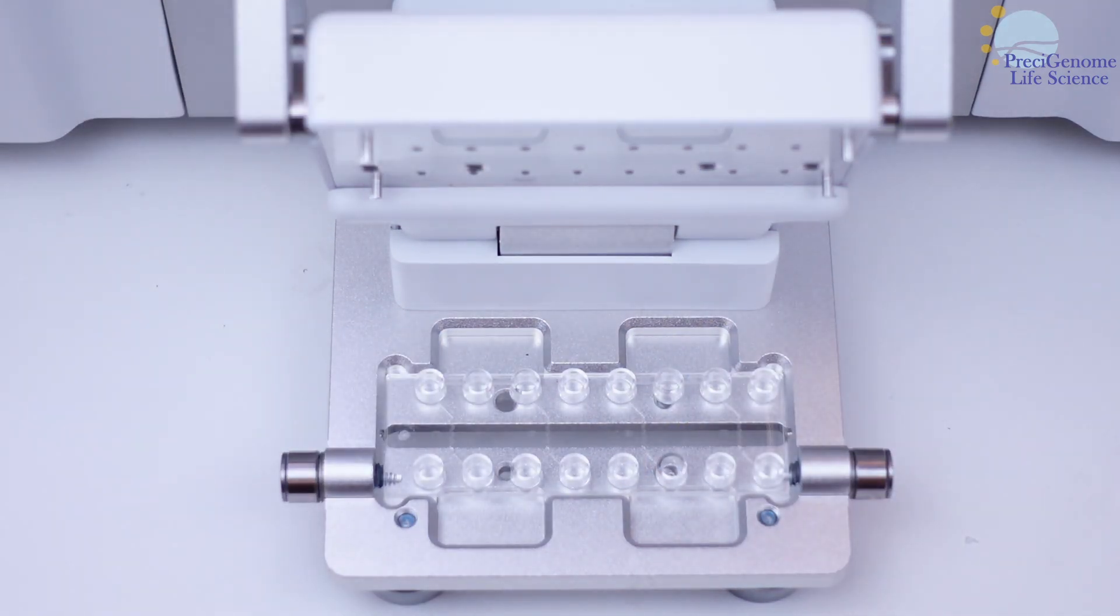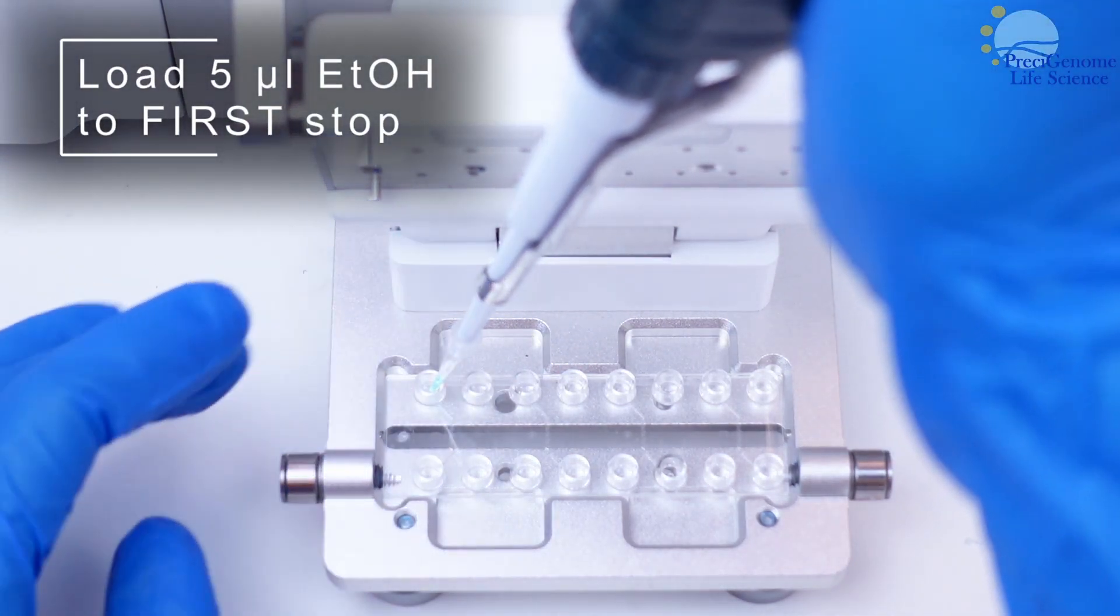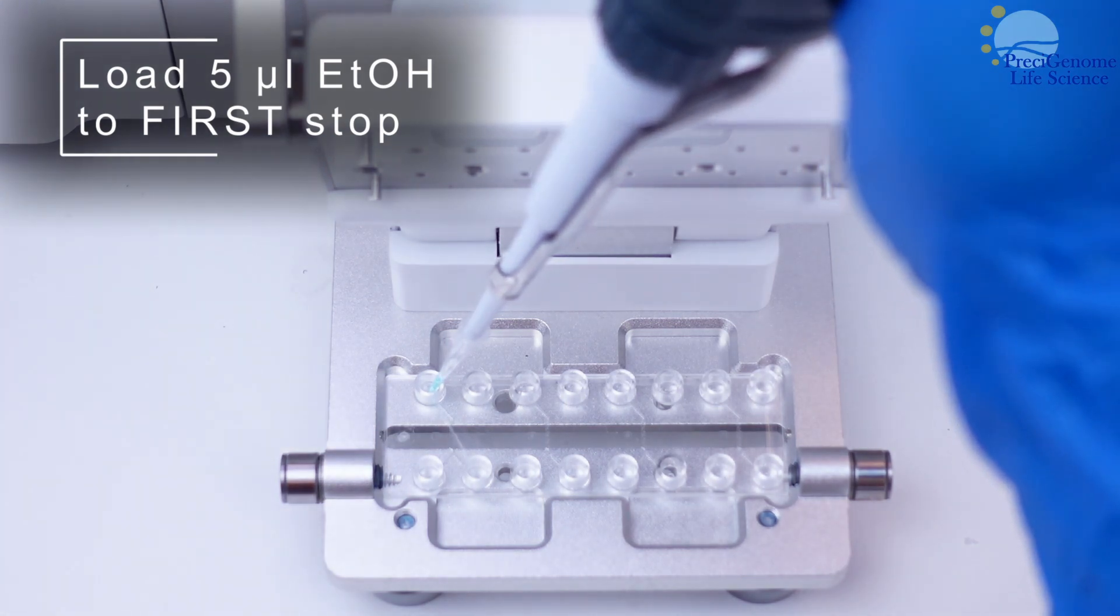Each chip channel has its collection outlet on the far left. Pre-load the channel with 5 microliters of anhydrous ethanol, pressing to the first stop of your pipette.